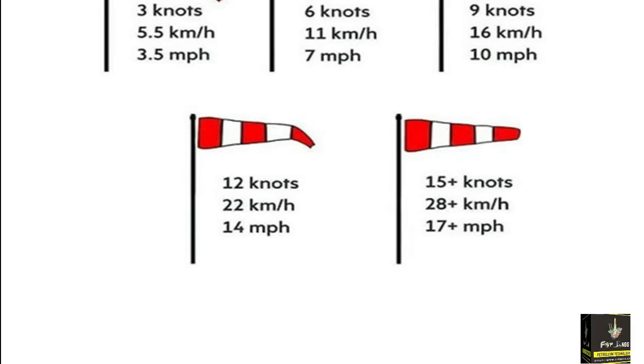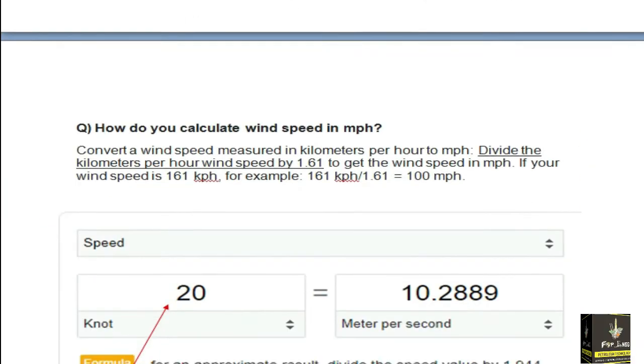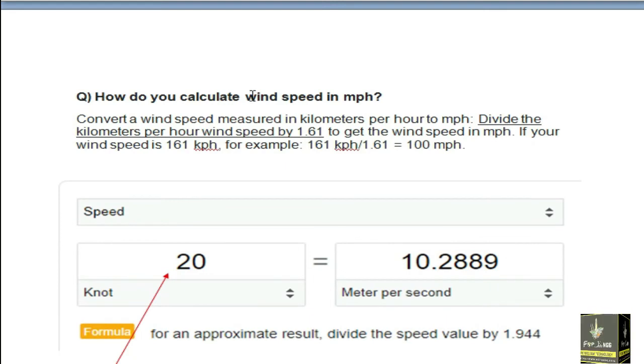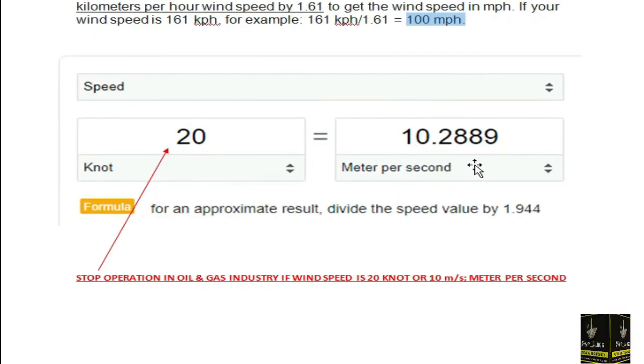Now, how do we calculate wind speed in mph? Convert a wind speed measured in kilometers per hour to mph by dividing the kilometers per hour by 1.61 to get the wind speed in mph. If your wind speed is 161 kph, for example, then you can divide by 1.61 and it is 100 miles per hour.